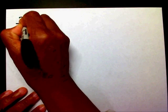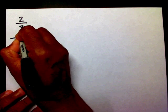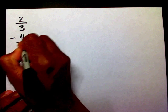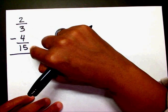Let's try 2/3 minus 4/15. Right now, whenever I'm getting ready to subtract fractions, I need a common denominator. I have a denominator of 3 and a denominator of 15 — they're not the same. So I need to get a new denominator by listing my multiples.